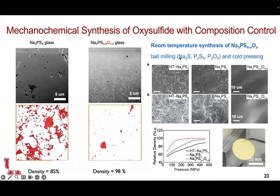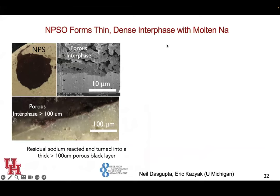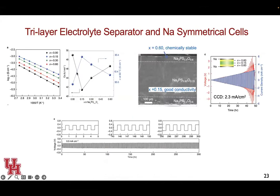The quality of the electrolyte is very critical for the stability of solid-state batteries. It can be produced at room temperature just with ball milling — no need to go to the molten state or typical glass manufacturing — and can be fully densified at very low pressure. It is even stable with molten sodium. With a traditional NPS solid electrolyte, you form a porous and very thick interface. With this NPSO-based solid electrolyte, the interface is only about 1.4–1.5 microns — very thin and stable. By combining a tri-layer structure, we demonstrate a critical current density of about 2.3 mA/cm², the highest reported with a sulfide-based solid electrolyte system with sodium metal.